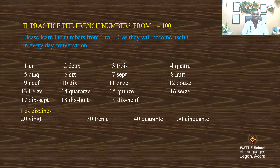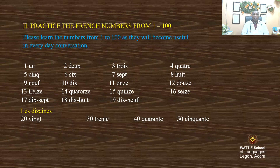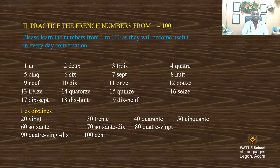So the tens — we are counting: 20, 30, 40, 50, 60, 70, 80, 90, 100.